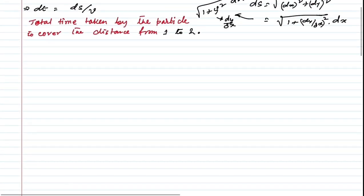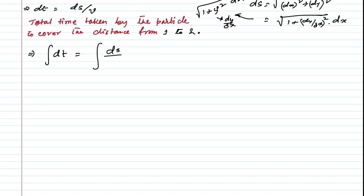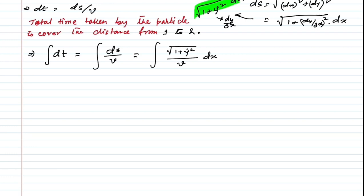The total time taken by the particle to cover the curve from position 1 to 2 is obtained by integrating: T = ∫DT = ∫DS/V. Replacing DS with √(1 + ẏ²) dx, we integrate from 1 to 2.